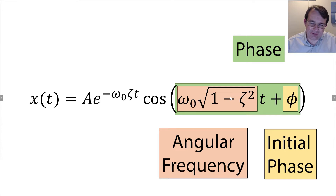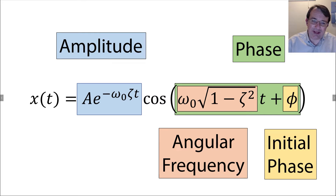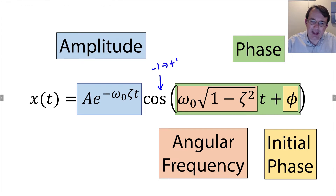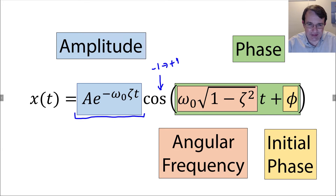Now let's look at the term in front of the cosine. Just like a simple harmonic oscillator, this term gives us the amplitude of the oscillations. The cosine term varies from minus 1 to plus 1, so the maximum displacement occurs when the cosine equals plus 1. Therefore, the maximum displacement is the amplitude, and we have this expression for the amplitude.